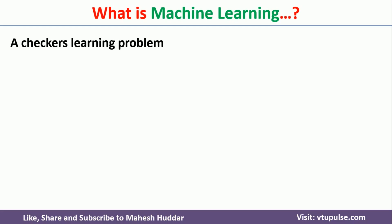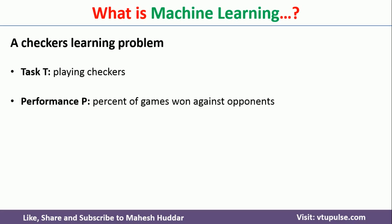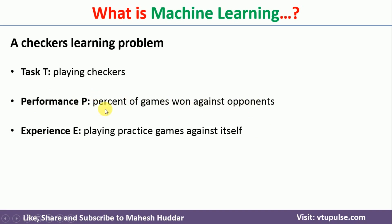We will take one more example: the checkers learning problem. Playing checkers will be the task. The percentage of games won against the opponent will be the performance. The experience will be playing practice games against itself. The model plays against itself again and again and records all those moves so they can be used in the real world. Initially, if it has played against itself 10 times, it may win around 50 percent of games. If it plays around 50 times, the performance increases and it may win around 60 percent of games against opponents. As and when it plays more and more games, the performance keeps increasing.